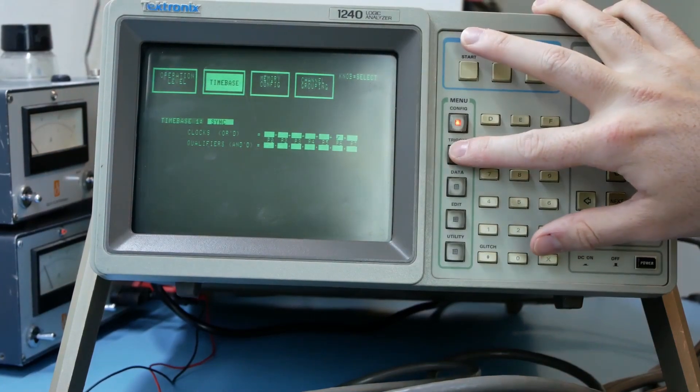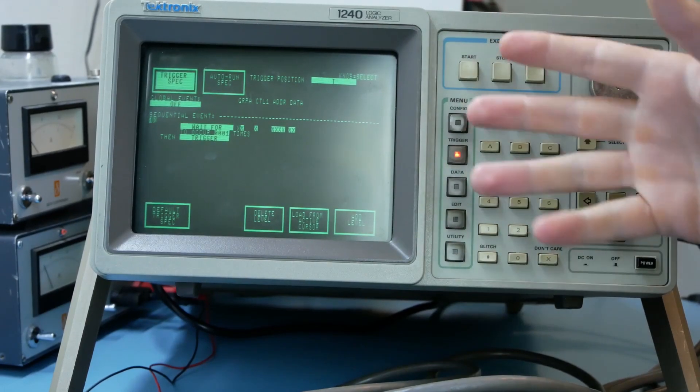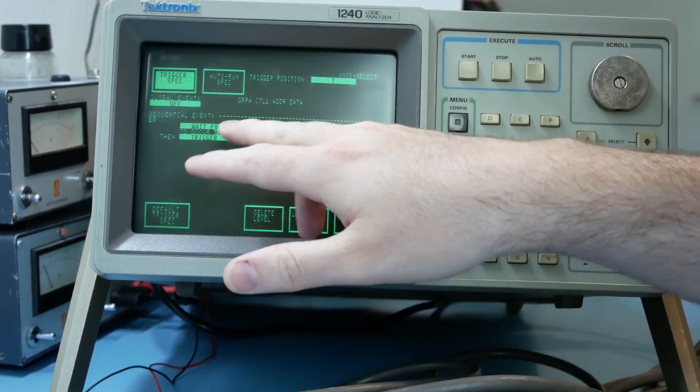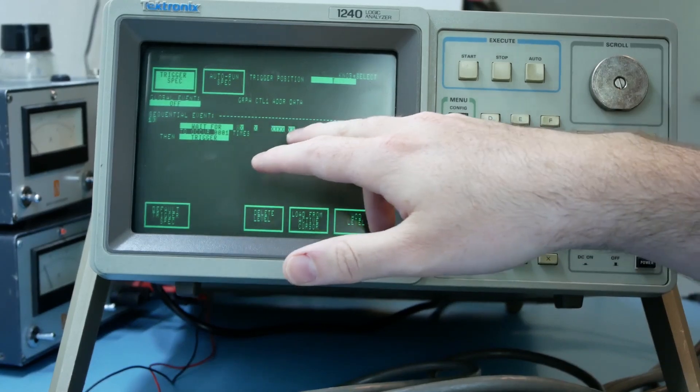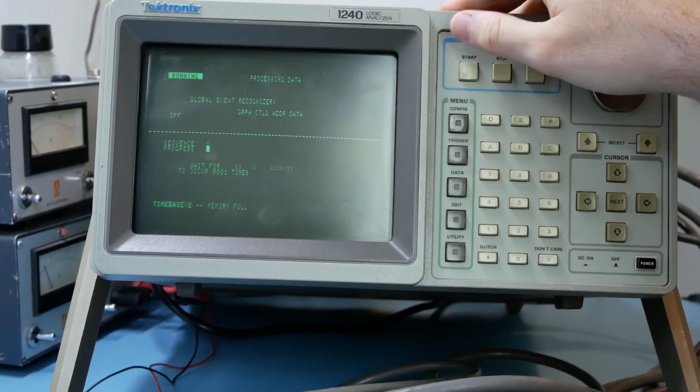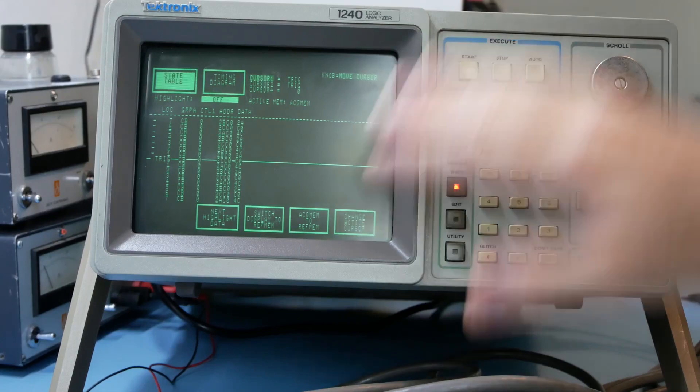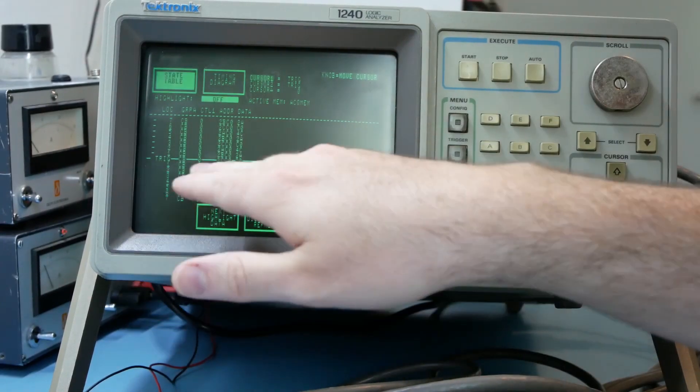So now we're ready to set up a trigger and sample some actual data. The trigger setup is set to don't care on every group. So this should always trigger as long as there's a clock available. And it did. There we go. We got some random data from the blinky LED program. So that's pretty cool.